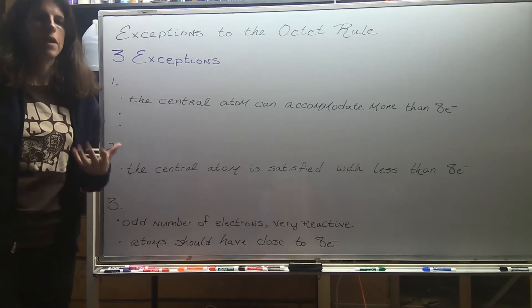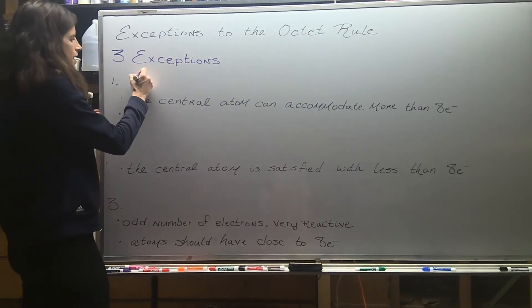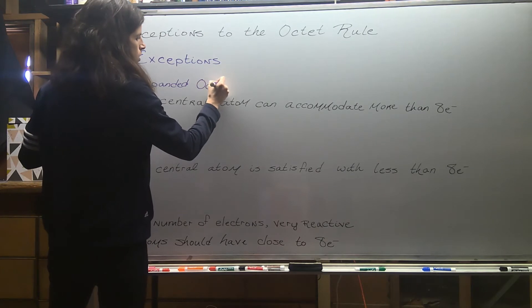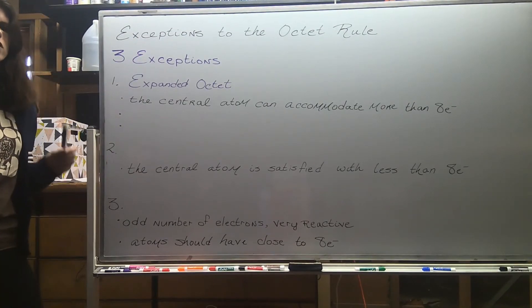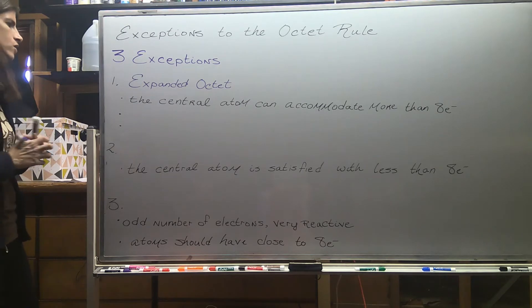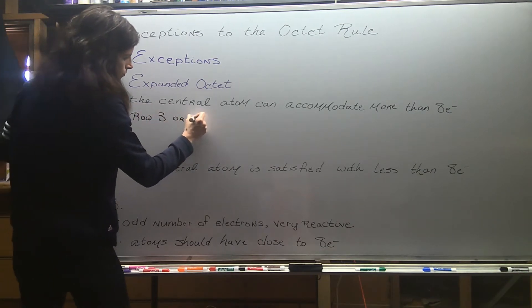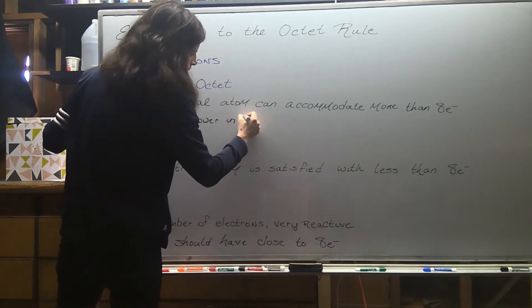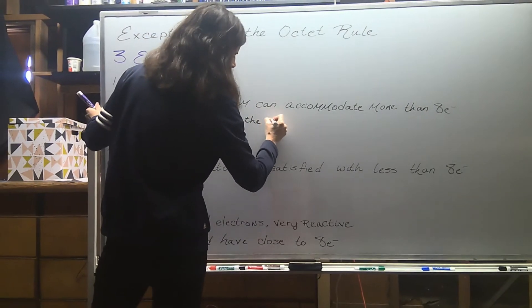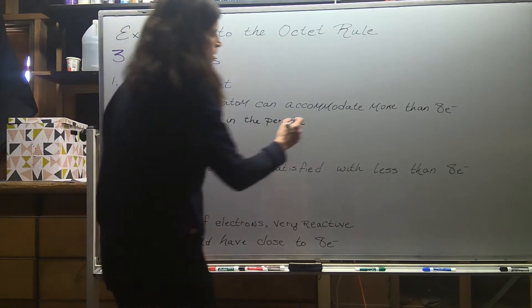For the most part we want our atoms to obey the octet rule, however there are some exceptions. The first is known as an expanded octet - it's exactly as it sounds. The expanded octet occurs when the central atom holds more than eight electrons. The central atom has to be big enough to do that, so we're only going to see this with atoms in row three or lower of the periodic table. It can expand to 10, 12, or 14 - there really aren't any guidelines about the extent of that expansion.